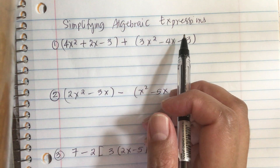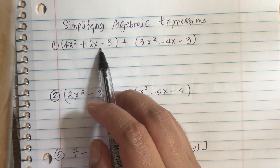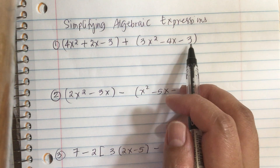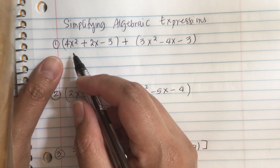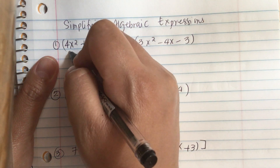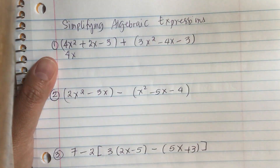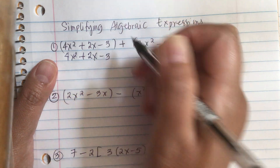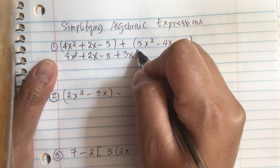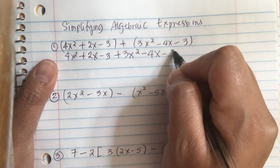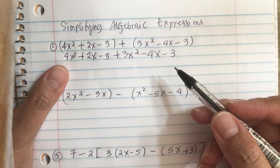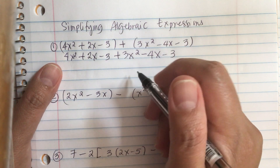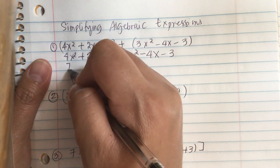Simplifying algebraic expressions. We have 4x squared plus 2x minus 3, plus 3x squared minus 4x minus 3. We rewrite this and then combine like terms. We have a 4x squared and a 3x squared for a net of 7x squared.